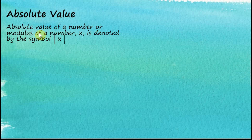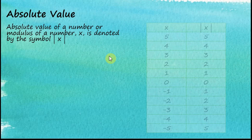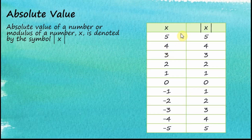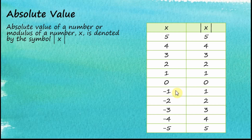The absolute value, or modulus, of a number x is denoted by placing x between two vertical lines. Looking at this table, the left column shows a series of numbers — some positive, some negative — and the right column shows their absolute values. When the number is positive, the absolute value is the same: five stays five, four stays four, and zero stays zero.